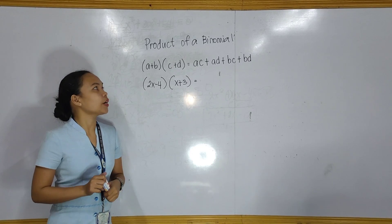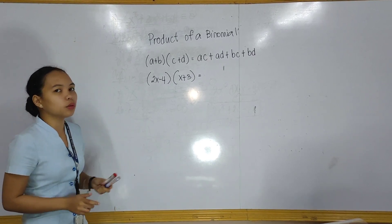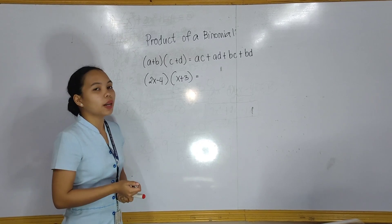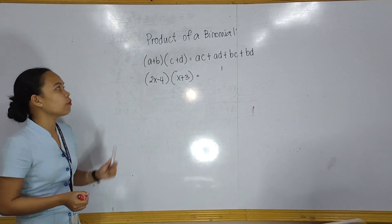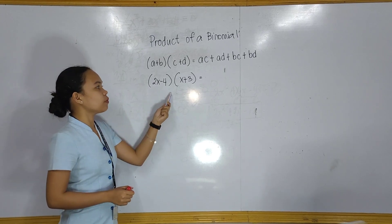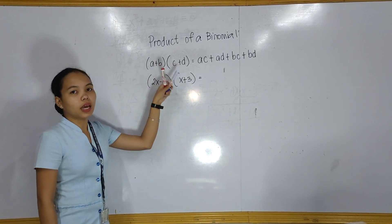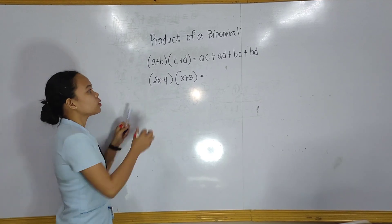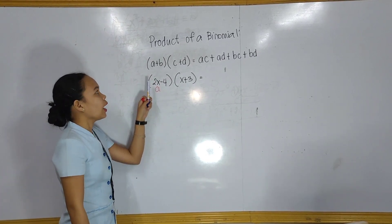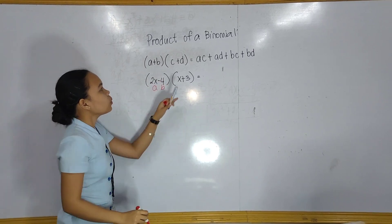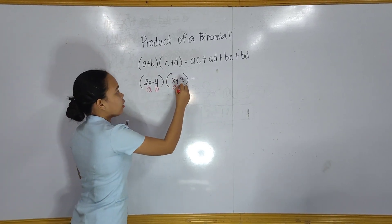The second way in finding the product of a binomial uses this formula: a plus b times c plus d equals ac plus ad plus bc plus bd. For example, using 2x minus 4 times x plus 3, we first identify a, b, c, and d. So a is 2x, b is negative 4, c is x, and d is positive 3.